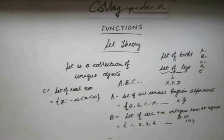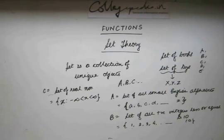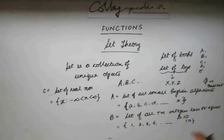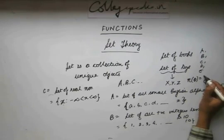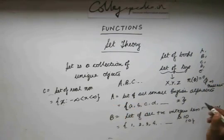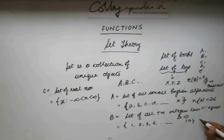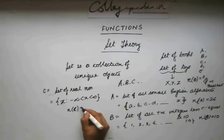A set can have finite or infinite number of elements. Set A has 26 elements, the integer set has 10 elements, and the set of all real numbers has infinite elements. A set can also have zero elements — that type of set is called a null set, denoted by phi. The number of elements of phi is 0. The number of elements of set A is 26, the integer set is 10, and the real numbers set is infinity.